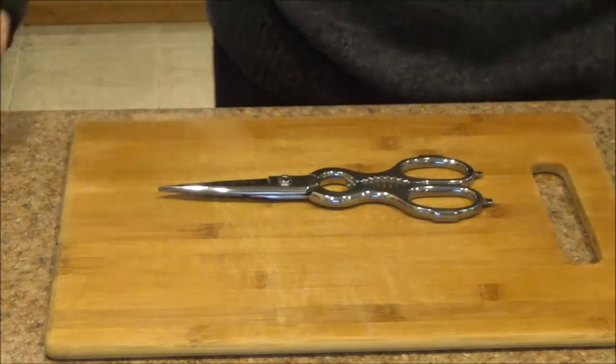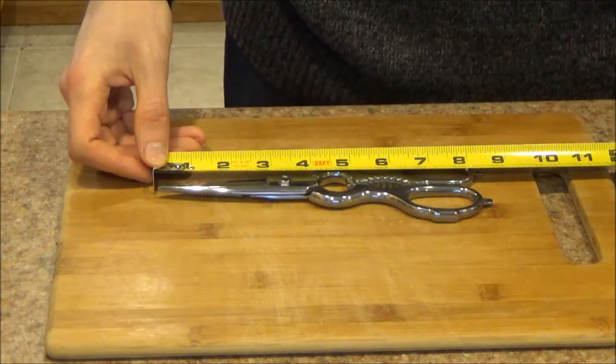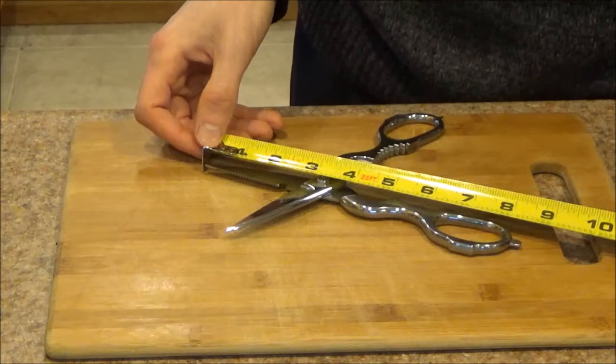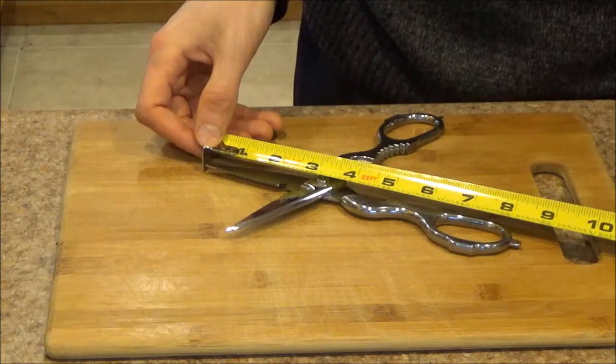So let's begin with some measurements! The overall length of the shears comes in at eight and three-eighths of an inch, and the length of the cutting edge itself comes in at two and three-quarters of an inch.